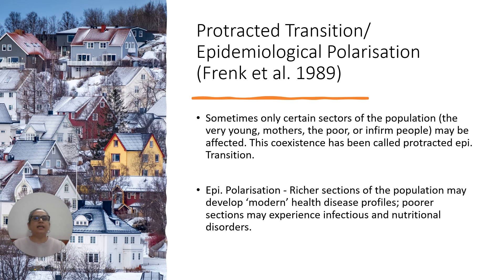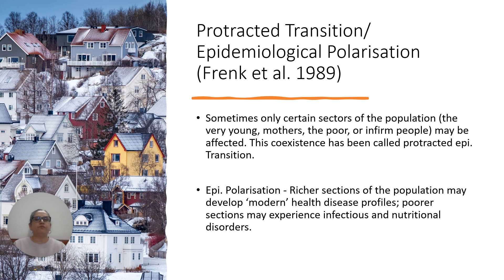Some scholars like Frank et al. in 1989 proposed the theory of protracted transition and the theory of epidemiological polarization. Protracted transition refers to situations where only certain sectors of the population get affected — for example, only children, mothers, the poor, or uninformed people — and this coexistence has been called protracted epidemiological transition. Epidemiological polarization refers to the situation where the richer sections suffer from modern chronic diseases, while the poorer sections suffer from infectious or nutritional disorders. These theories were proposed to overcome some of the limitations of Omran's theory.